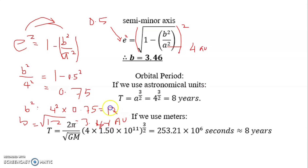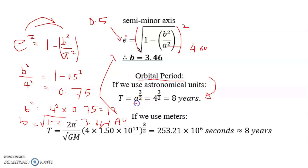Now to obtain the orbital period, we substitute into Kepler's third law. Since a is in AU, T = a^(3/2) = 4^(3/2) = 8 years. This directly gives the answer in years.